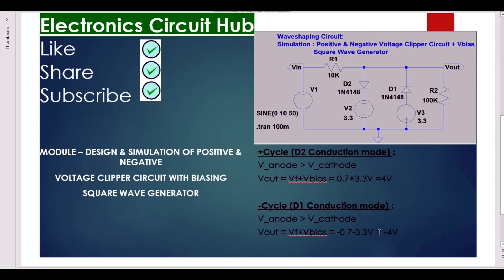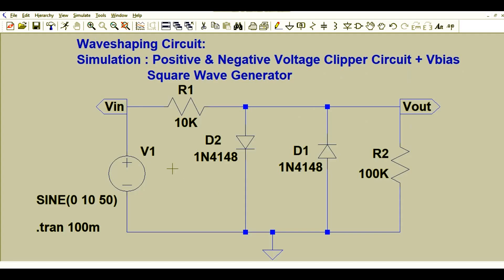If you remove this voltage V3, you will get only minus 0.7 volts. Now we will see the behavior of this circuit by using LTSPICE simulation. Here I have drawn the circuit already.